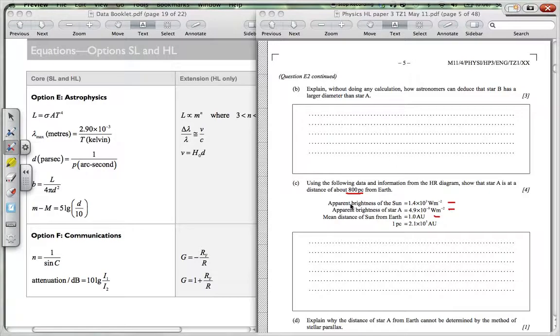Now, because they're talking about apparent brightness, I would use my apparent brightness formula, which is that one over there. So you have that B is equal to L over 4πD². So I can change that formula around to be D² is equal to L over 4πB.